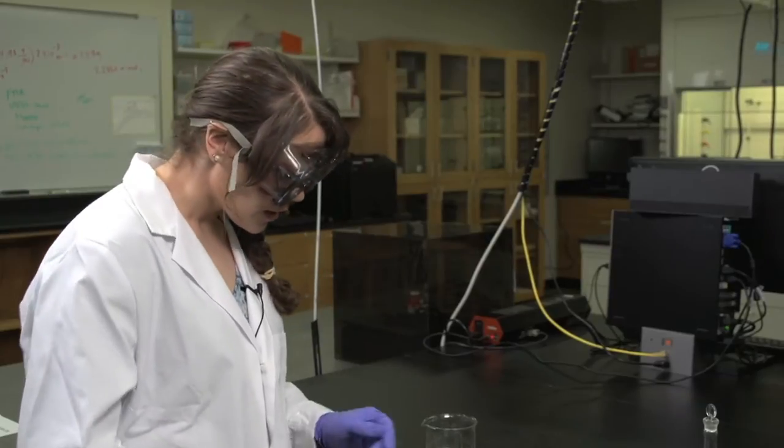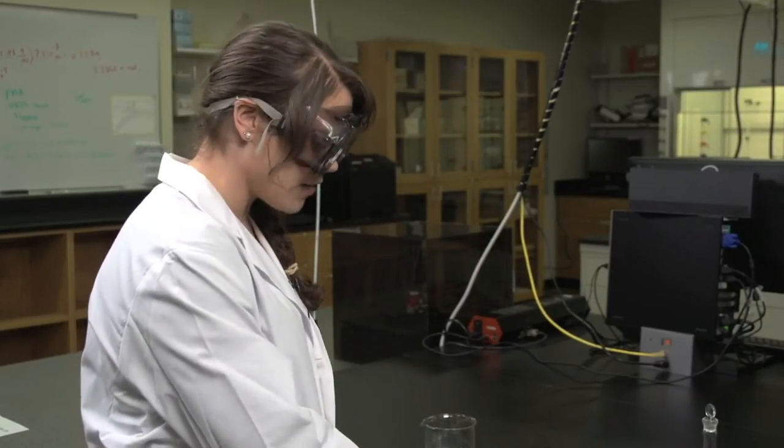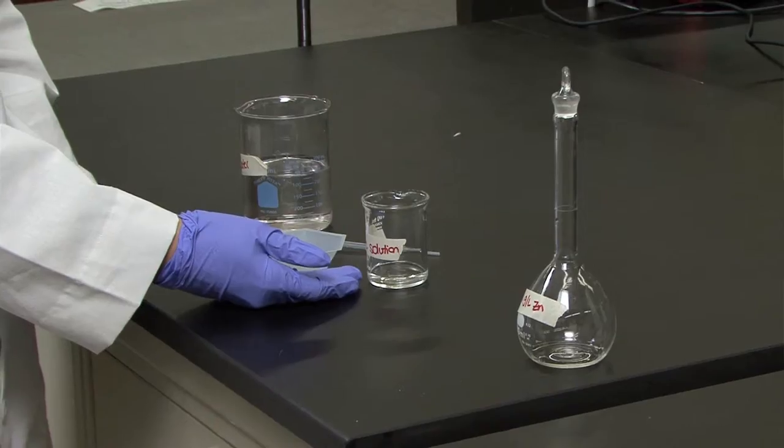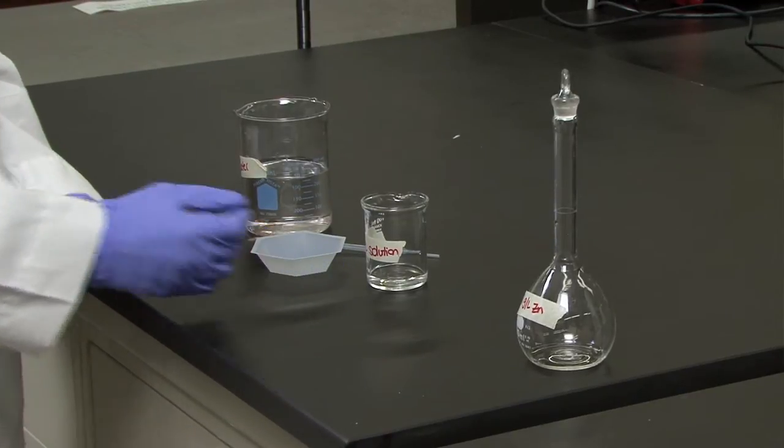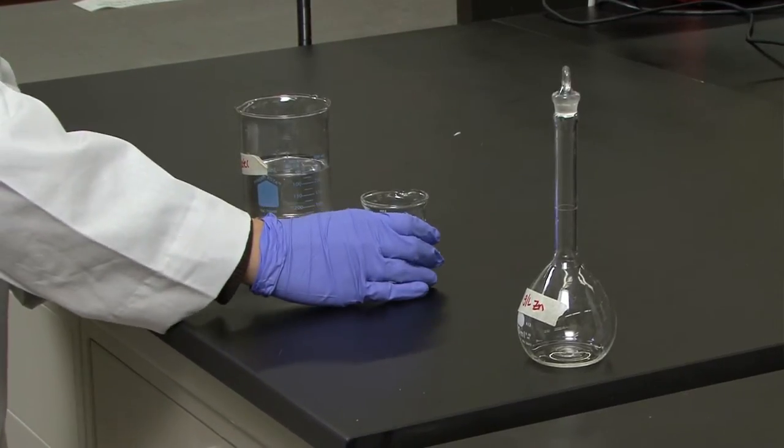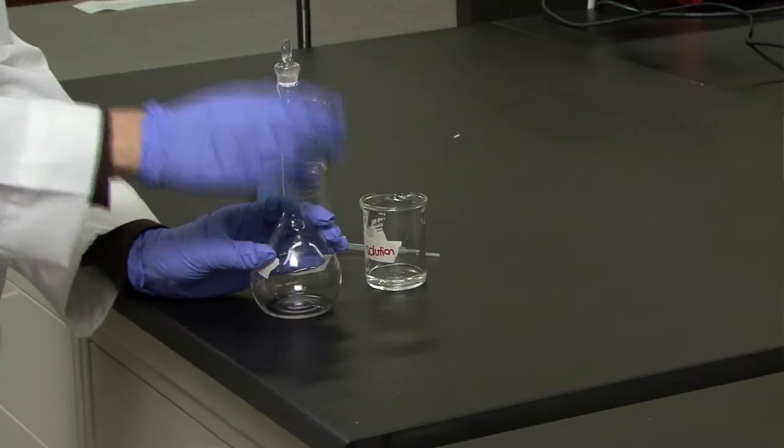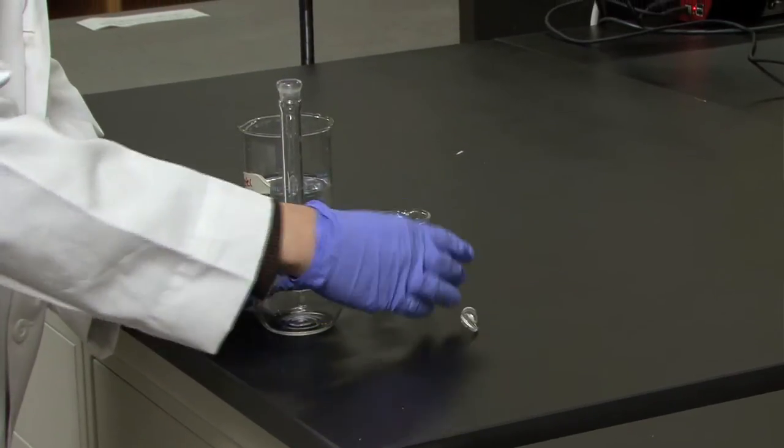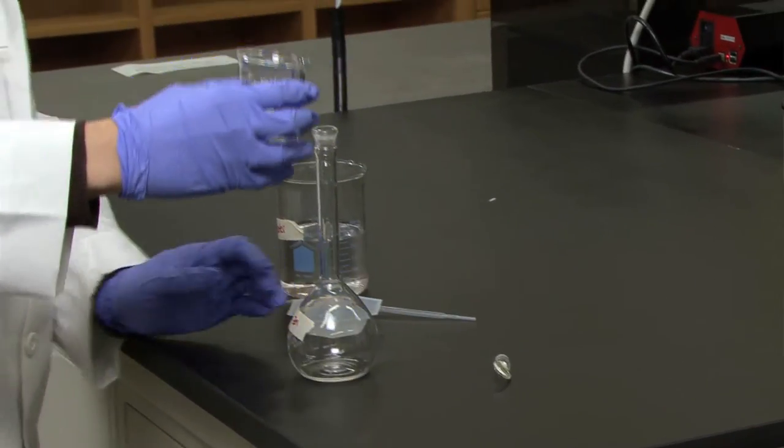Today I'm going to show you how to quantitatively transfer a solution into a volumetric flask. I have already dissolved my zinc metal in weak nitric acid. First, I'm going to pour my dissolved zinc directly into the volumetric flask.